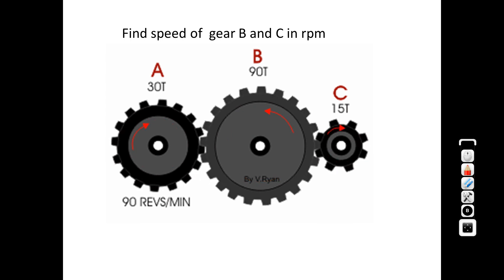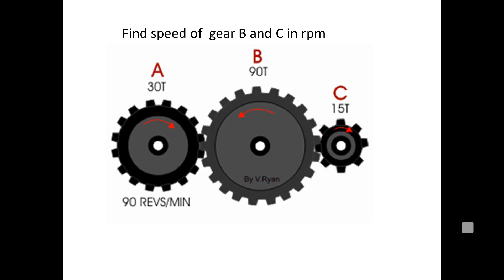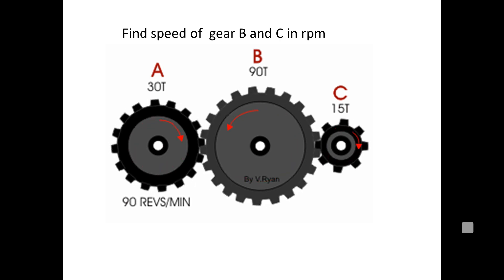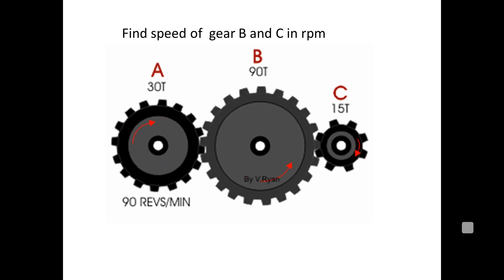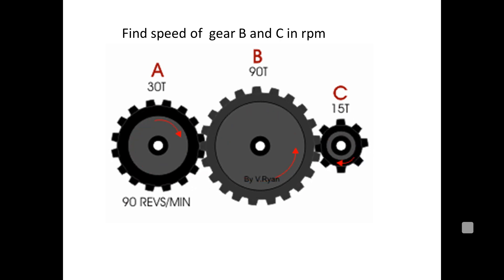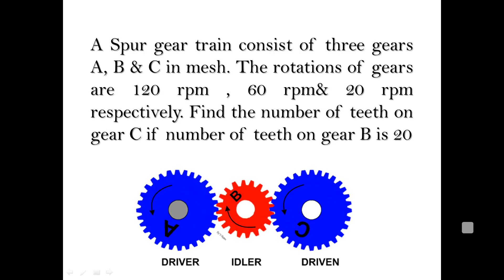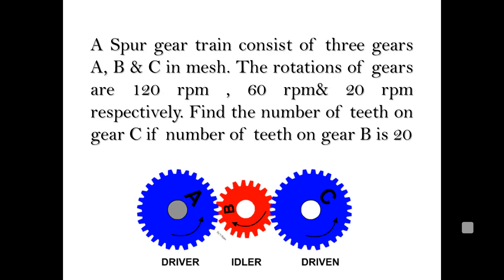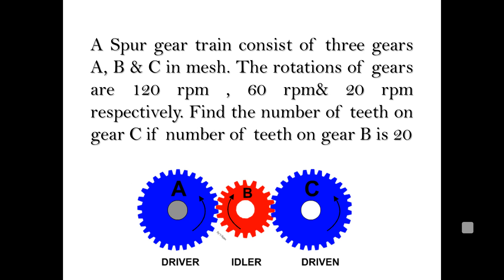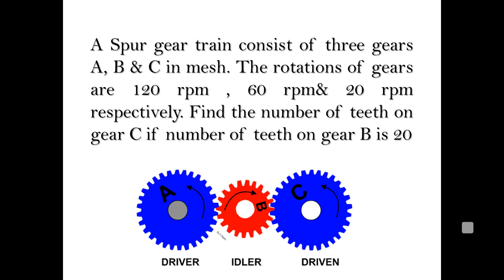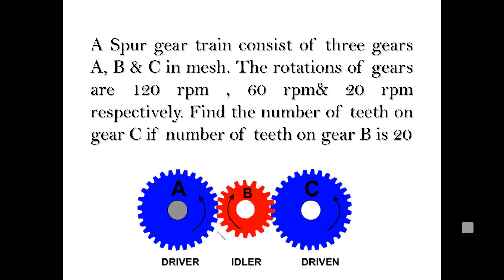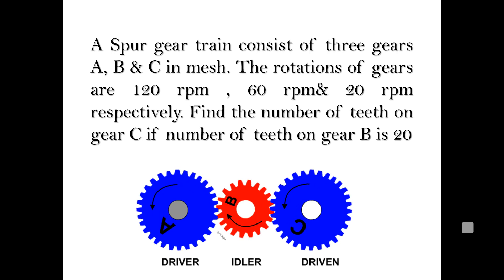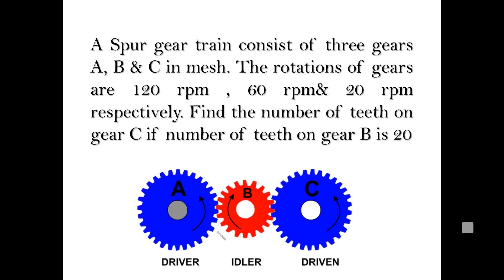For MCQ questions, options may ask about clockwise or anticlockwise rotation. When gear A rotates clockwise, gear B will be anticlockwise, and gear C will be clockwise again. The values of diameters in the animation are just illustrative. Gear B here is the idler gear, while gears A and C are the driver and driven gears respectively.